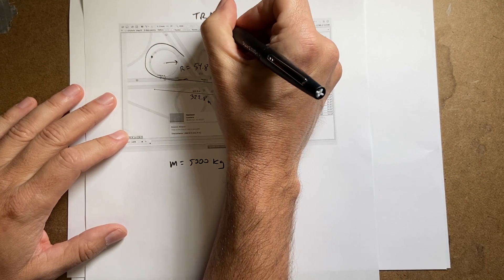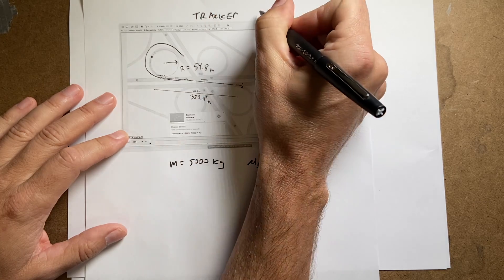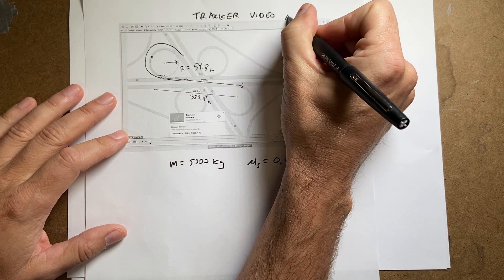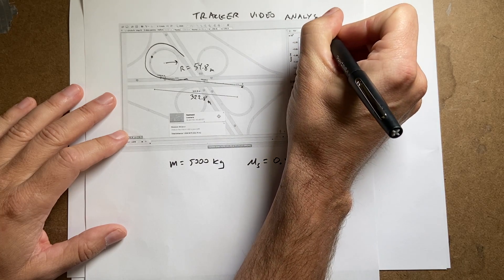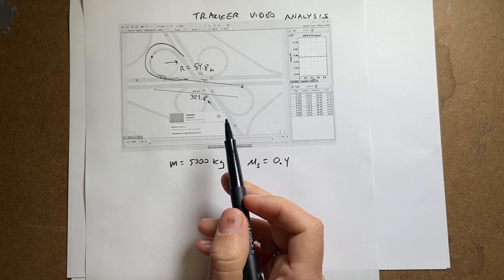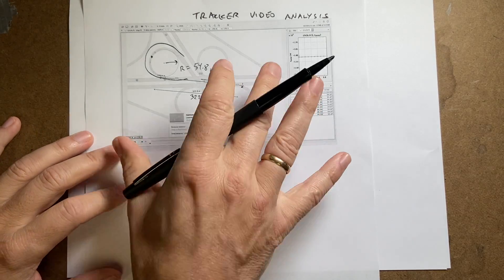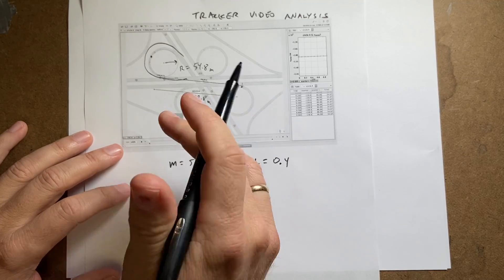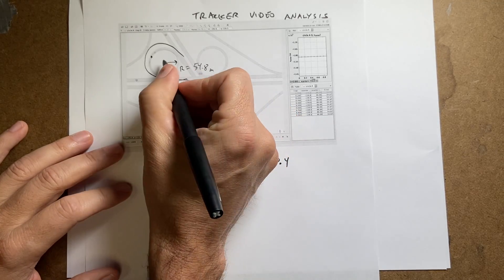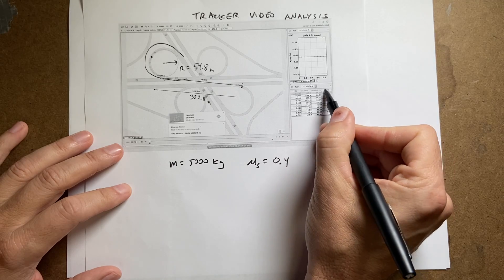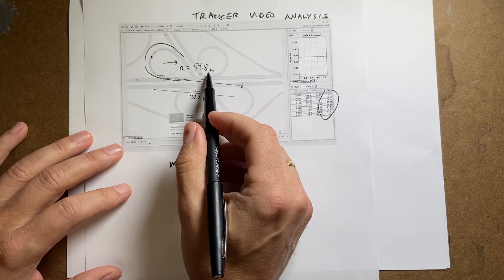If you just Google tracker video analysis, it's a free Java program that runs pretty much on everything that you can use to do video analysis. But you can also measure things in a picture and they have a circle fitter. So I fit the circle. There is the center of the circle. And this gives me a radius over here of 54.8 meters.